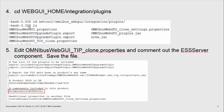Move to the WebGUI integration plugins directory where the configuration files are for the export, and edit the file omnibus-webgui-tip-clone.properties. Comment out the ESS server component and save the file. The ESS server component is only used in 7.4, if at all.